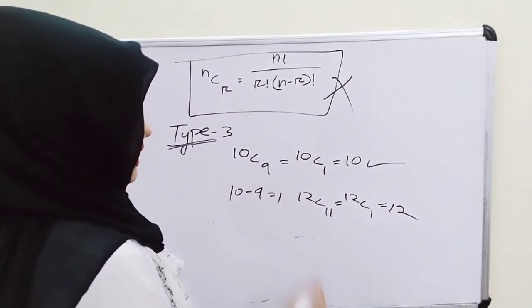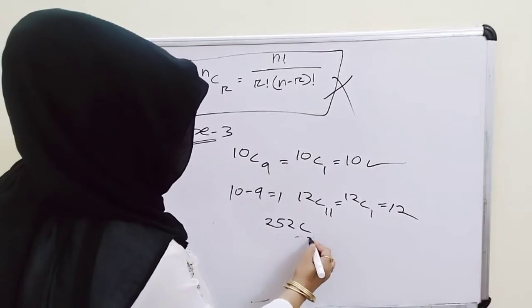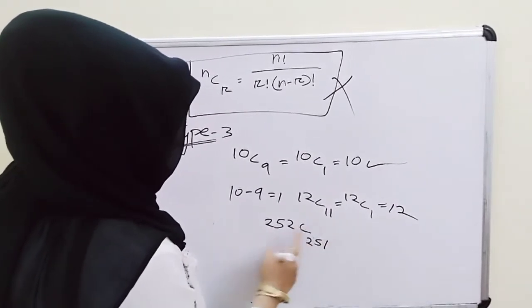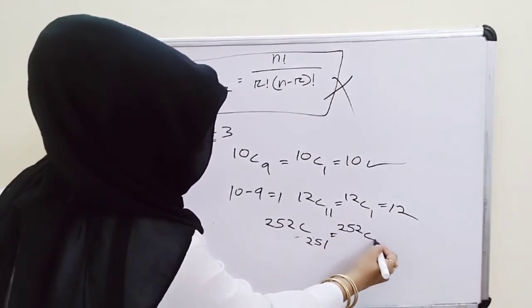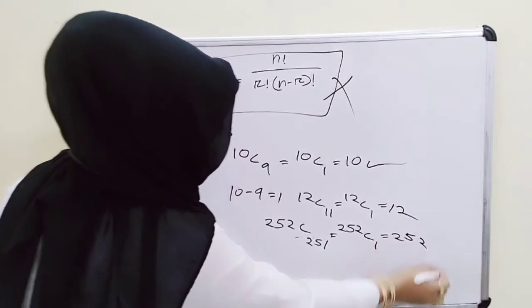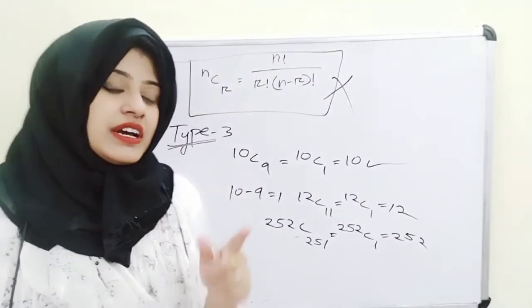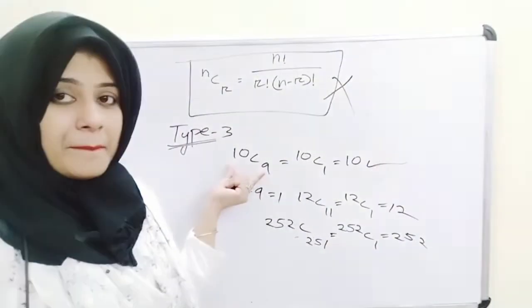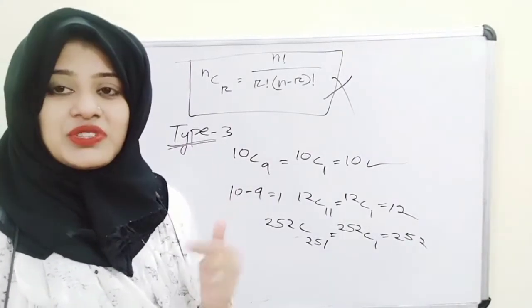More Type 3 examples: if the question is 12C11, write 12C1 and the answer is 12. If the question is 252C251, the difference is 1, so write 252C1 and the answer is 252. But what if the difference is not 1? I'll explain that next.